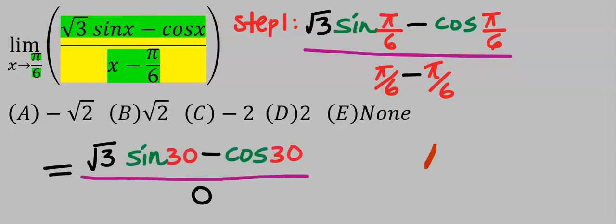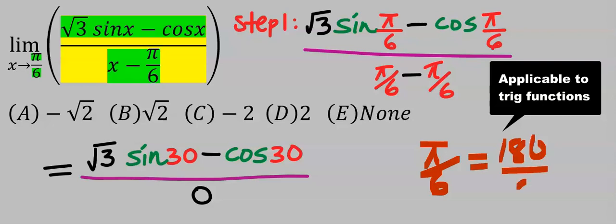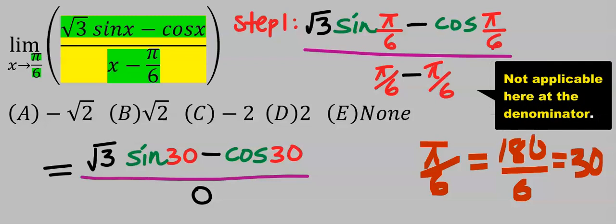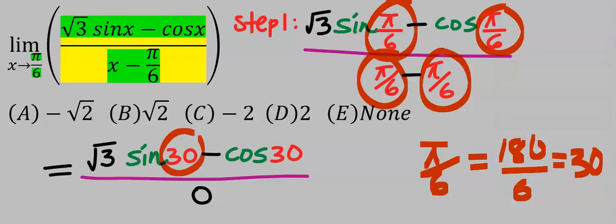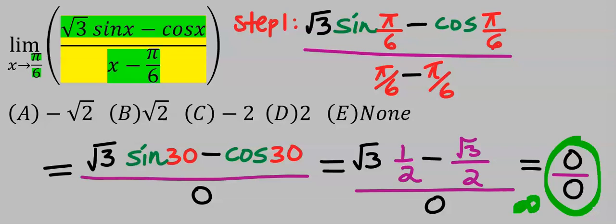Pi over 6 is the same thing as 180 divided by 6, which is 30 degrees. Hence, instead of pi over 6, I will now have 30 degrees. Sine 30 is 1 over 2, but cos 30 is root 3 over 2, and this will give you 0 over 0, which is undefined.